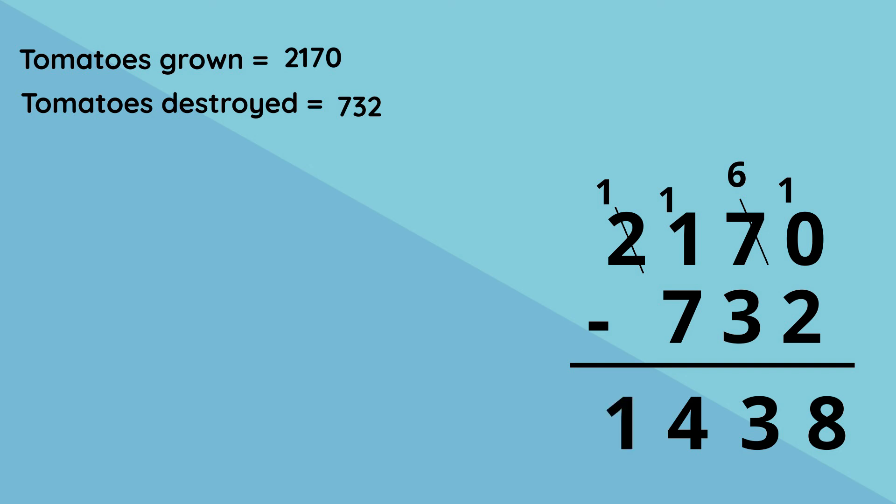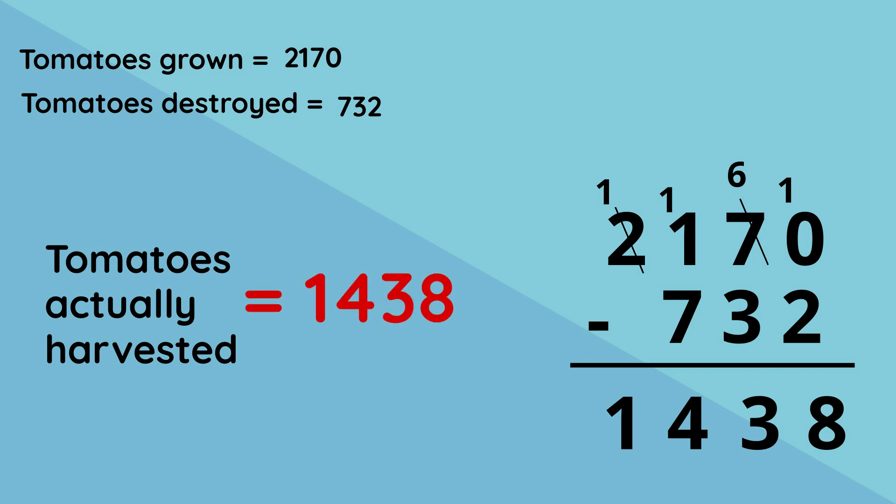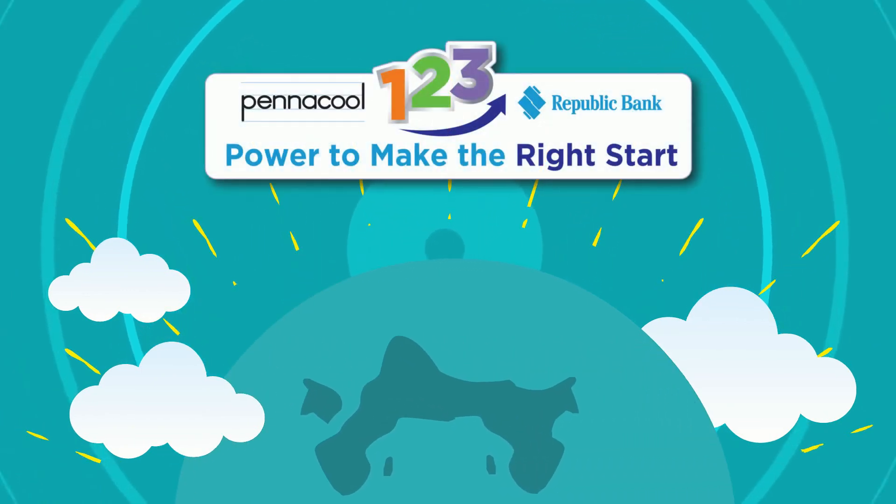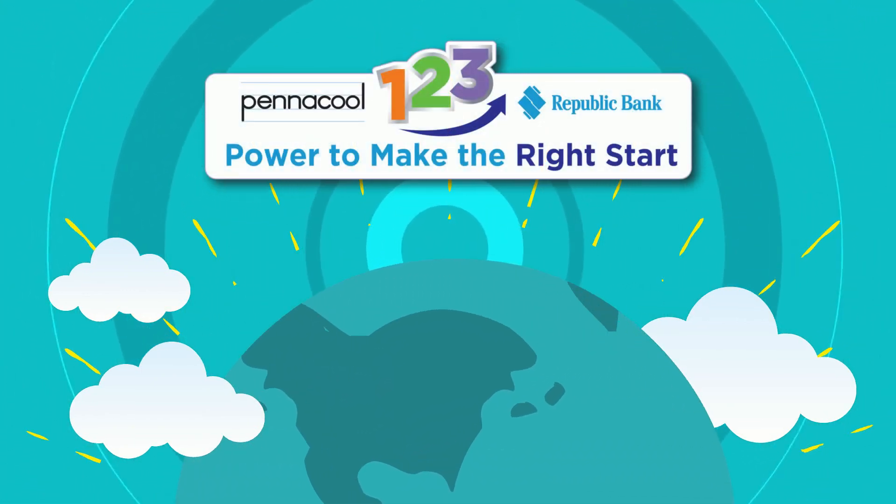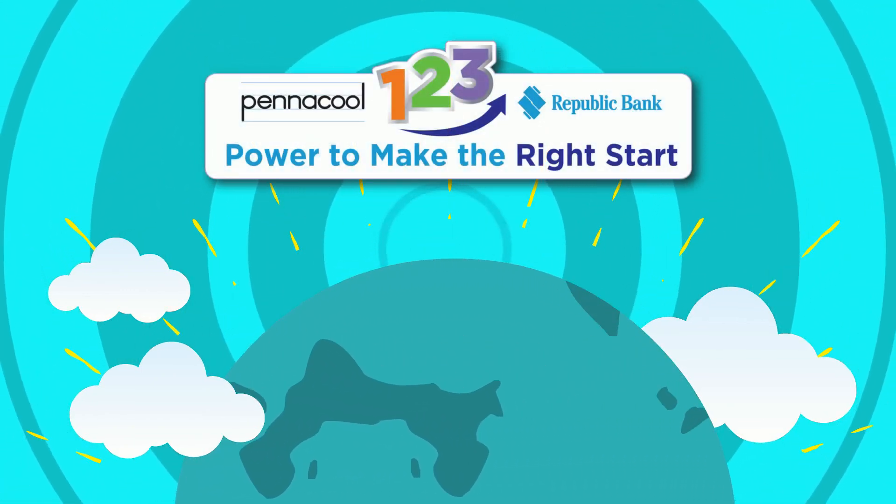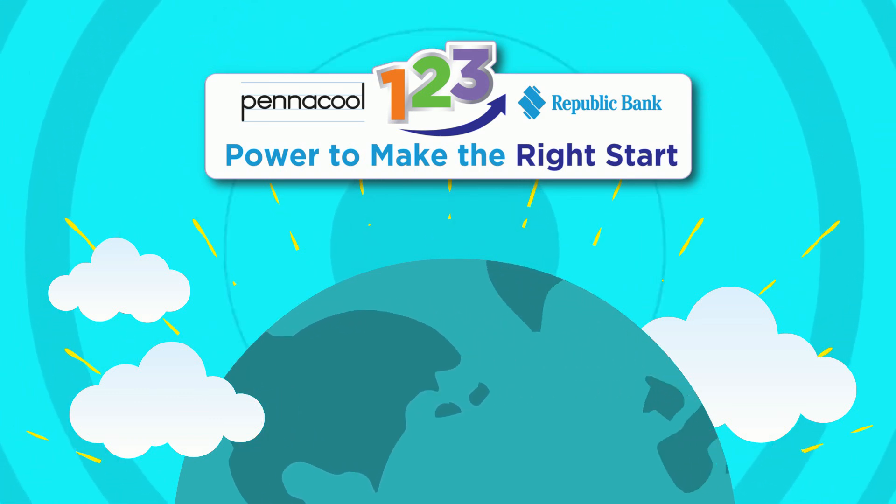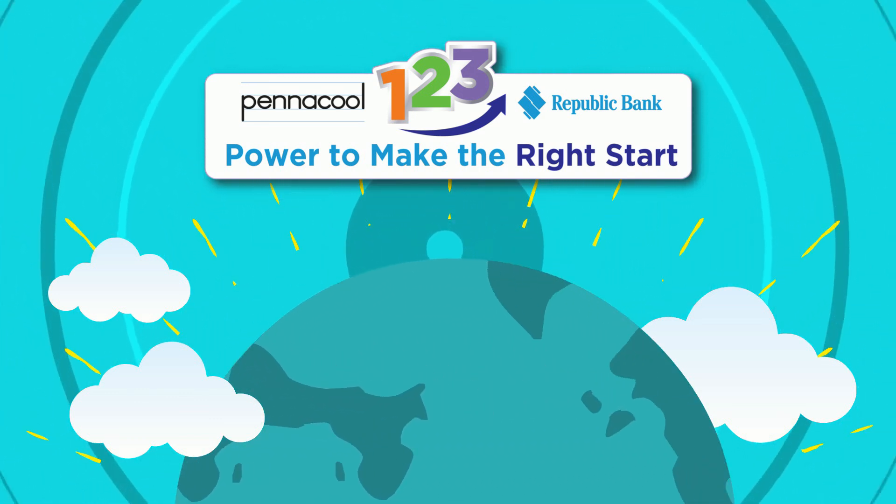So for our answer to the amount of tomatoes actually harvested is 1,438. Fantastic job on problem solving. Thank you for visiting Math City today. Try the exercises on Pinnacle.com to earn points and win great prizes.